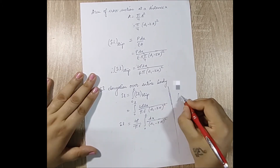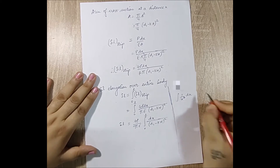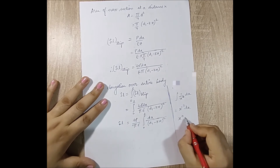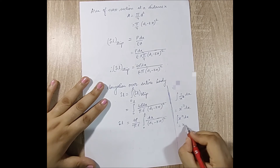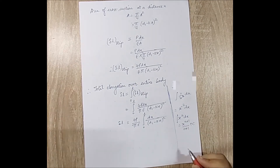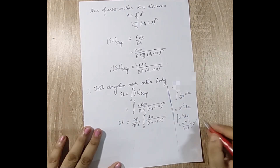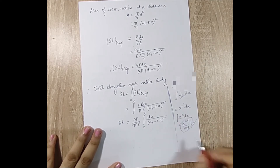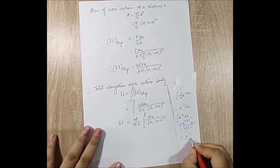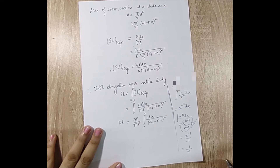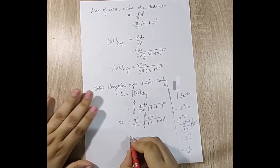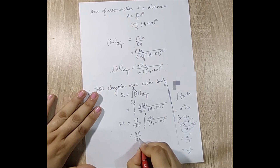To integrate 1/(d1 - k·x)², I use the power rule: ∫x⁻² dx = x⁻¹/(-1) = -1/x. For the term 1/(d1 - k·x)², treating (d1 - k·x) as the inner function, the result is -1/(d1 - k·x), evaluated from 0 to L.